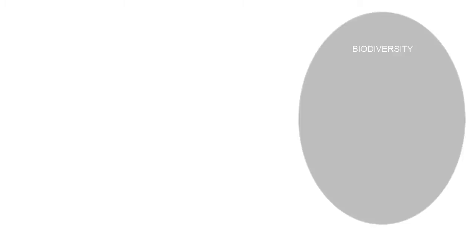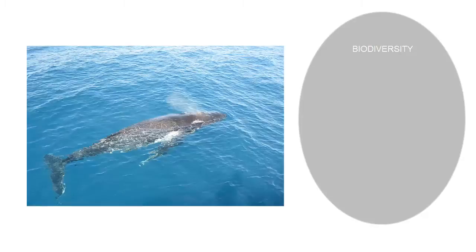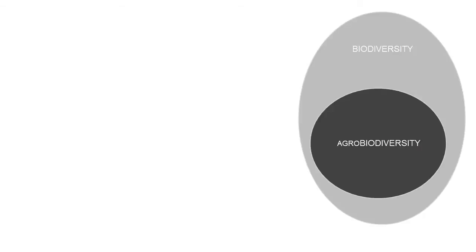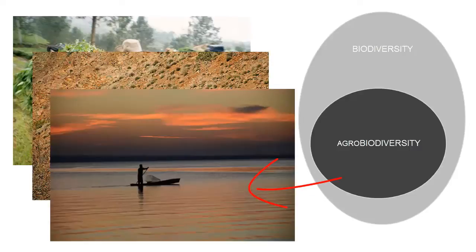Let's quickly go over the definition of agrobiodiversity. It's the vital subset of biodiversity — and biodiversity is the variety of life on earth, from the tiniest microorganisms to the mighty whales, along with the habitats that they depend on. So agrobiodiversity is simply the variety of life developed and actively managed by farmers, herders and fishers. In this case, I'll be specifically concentrating on plant genetic resources including crops, pasture and rangeland species and so on.